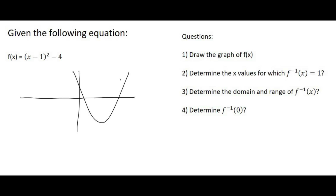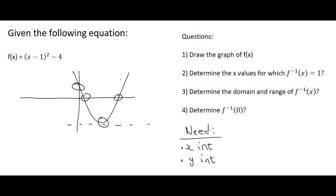Well, there's definitely x-intercepts, y-intercept, and of course a turning point, because people sometimes get stuck and they're like, oh, but what about the asymptote? Meanwhile, if you just draw a quick sketch, you'd realize there is no asymptote. We don't have a dotted line going through the bottom there, and so those are the only three things that we would need: x-intercept, y-intercept, turning point.